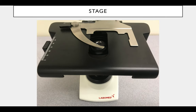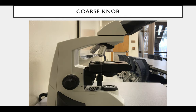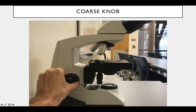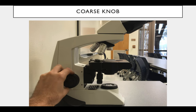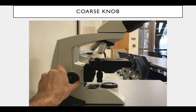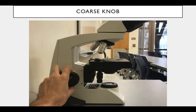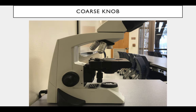Then you've got the stage — that's where all the action happens, the big black space there. You've got a couple of knobs on the side. The one on the outside is the coarse knob. This moves the stage up and down a lot, so in big increments you use the coarse knob. You'd only ever use the coarse knob with the 4x objective lens.